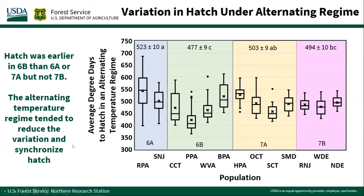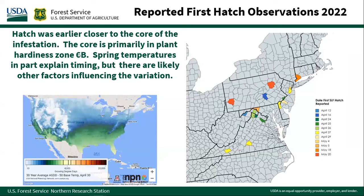At the alternating Scranton, Pennsylvania regime, hatch was still earliest at the 6B zone. Basically, the alternating regime reduced variation and hatch was generally more synchronized — eggs getting to the point where they're ready to hatch and then waiting for proper conditions. Does this have any reality to what's happening in nature? With the help of Greg Parra, I collected information on first reported hatch dates for various places throughout the infested range. In the 6B hardiness zone, hatch did tend to occur earlier than in outlying areas. Spring temperatures may partly explain this variation, but aren't likely the only factors — maternal effects or other things based on population size or host use may also be involved.